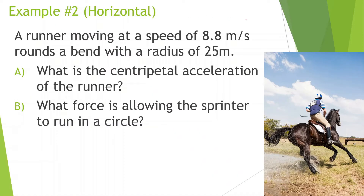A runner moving at a speed of 8.8 meters per second rounds a bend with a radius of 25 meters. What is the centripetal acceleration of the runner? What is the force allowing the sprinter to run in a circle?